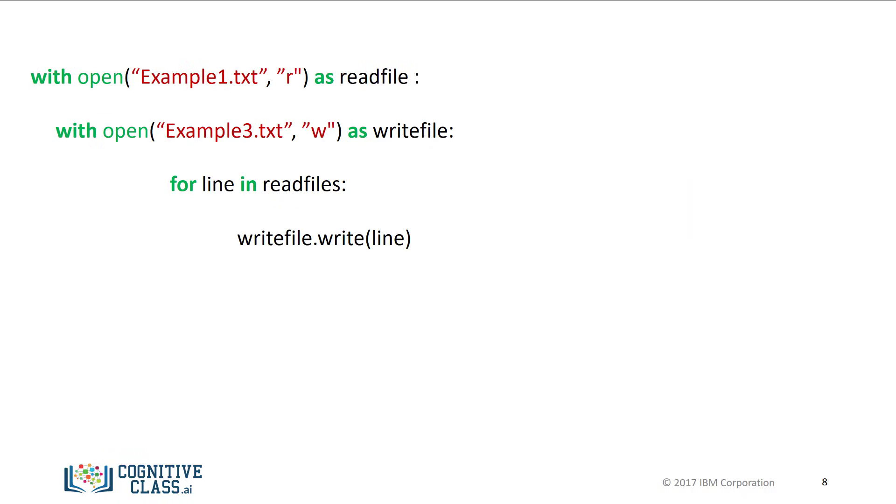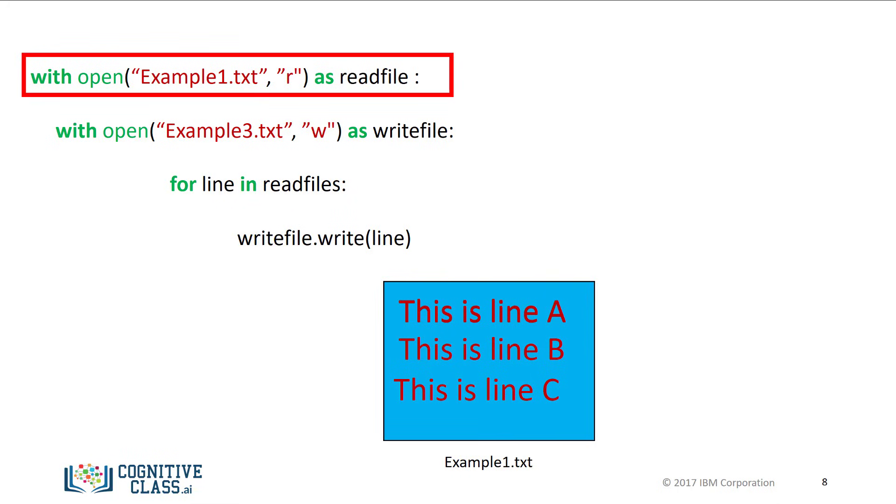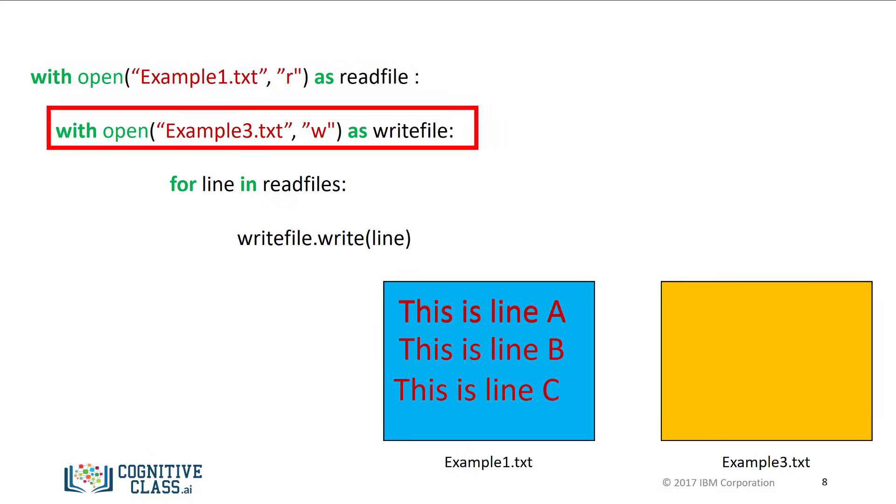We can copy one file to a new file as follows. First, we read the file example1 and interact with it via the file object readFile. Then we create a new file example3 and use the file object writeFile to interact with it.